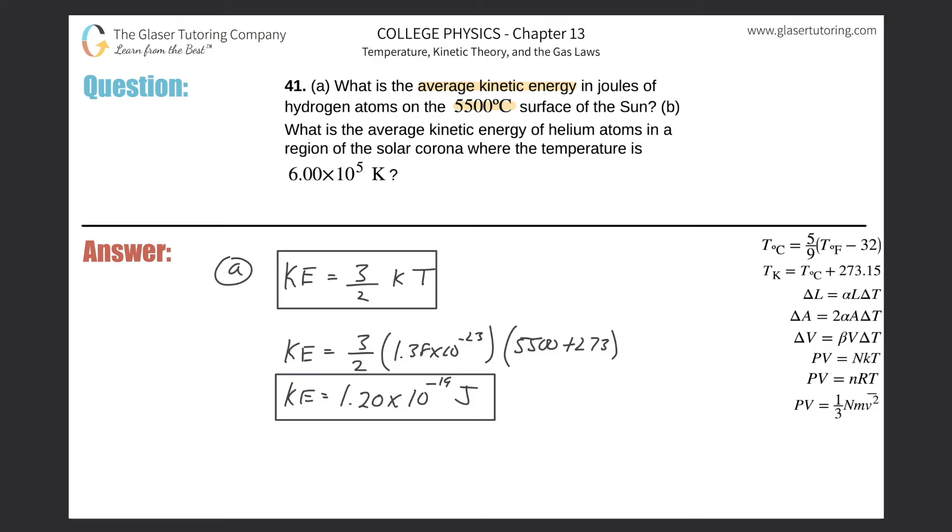And let's take a look now at letter B. So B, what is the average kinetic energy of helium atoms in a region of the solar corona where the temperature is 6 times 10 to the fifth Kelvin?